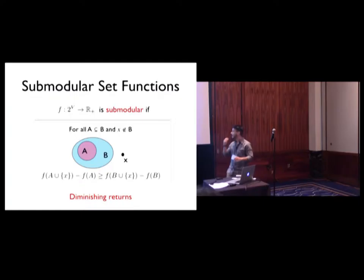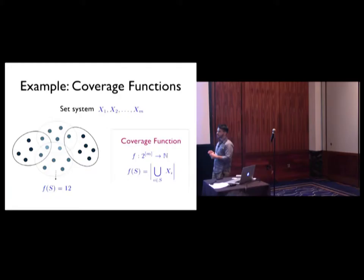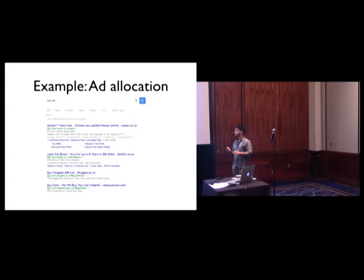So as motivation, let me talk about some examples of submodular functions. For instance, coverage functions are submodular. In this case, we have a ground set that is a collection of sets, and the value of the function is the number of points covered by the sets we've chosen. In this example we pick those two lighter sets and the two cover 12 points.